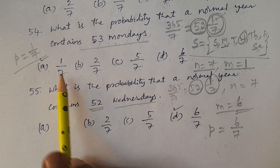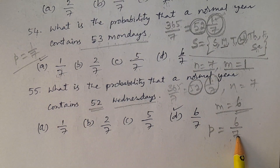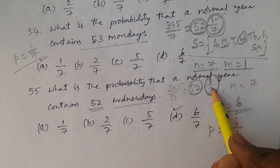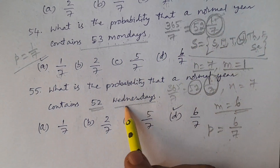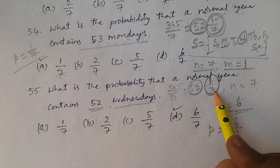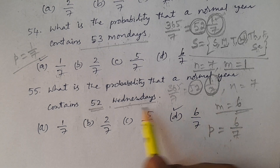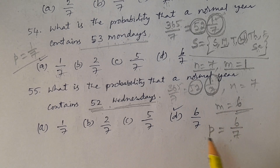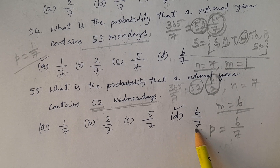To summarize for normal years: 53 Mondays (or any specific day) has probability 1/7; 52 Wednesdays (or any specific day) has probability 6/7, since 1 − 1/7 = 6/7. The answer is option D, 6/7.